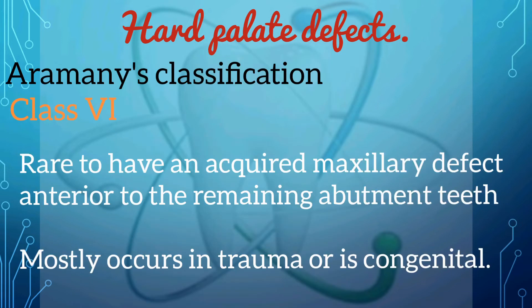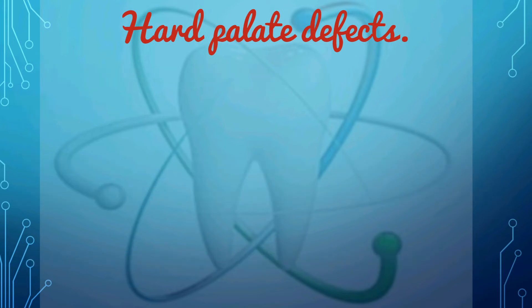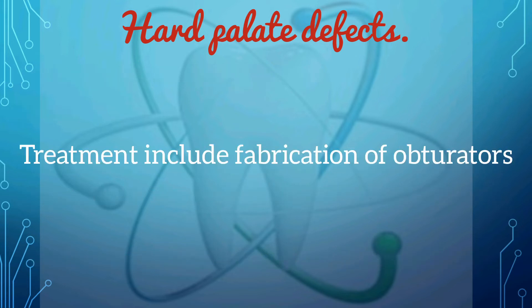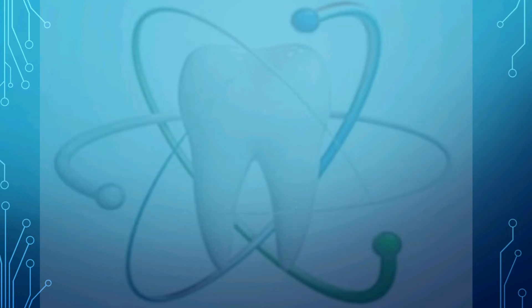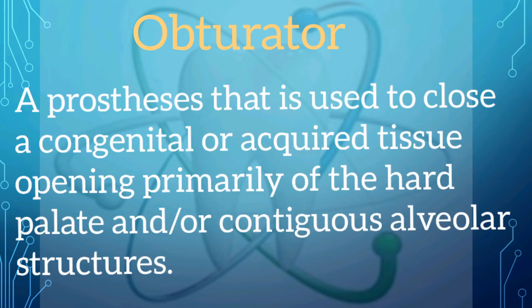Class 6 defects are rare acquired maxillary defects anterior to the remaining abutment teeth, mostly occurring due to trauma or congenital causes. The treatment of hard palate defects includes the fabrication of obturators. An obturator is defined as a prosthesis used to close a congenital or acquired tissue opening, primarily of the hard palate and/or contiguous alveolar structures.